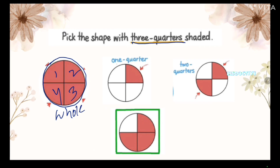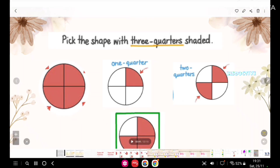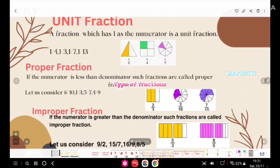One quarter means one by fourth — one part shaded. Two quarters means two by four — four equal parts and two parts are shaded. Three quarters: from four parts, three parts are shaded, that's why this one is three fourths, or we can say three quarters are shaded. Now we will learn the types of fractions.